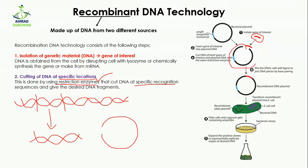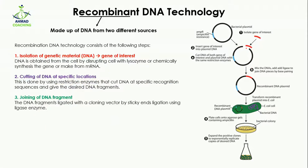Now comes the third step, which is the joining of DNA fragments. Recombinant means from two different sources — one source is human, while this plasmid or vector comes from the bacteria. Two different DNAs are going to be combined together, that is why we call this recombinant DNA technology. The human gene is going to be inserted into the bacterial vector. These bacterial vectors are naturally present in the bacteria. We are going to combine these two genes by the help of sticky end ligation using the ligase enzyme.